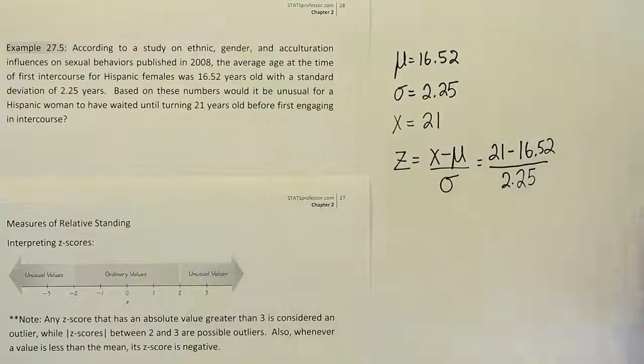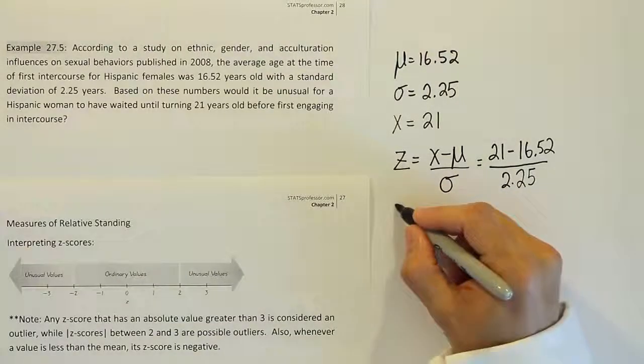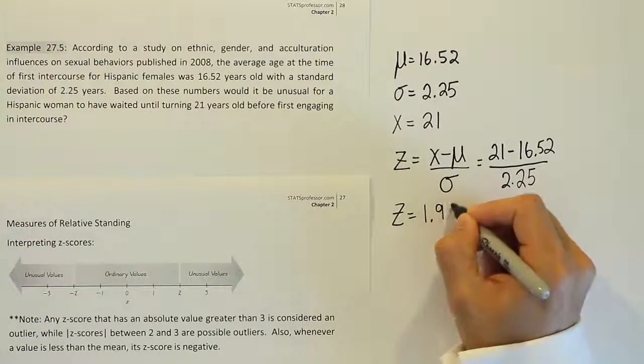When we're finished, we get 1.9911111. So 1.99 basically. So the z-score is equal to 1.99.